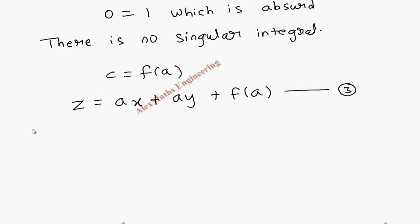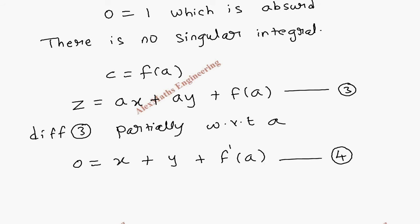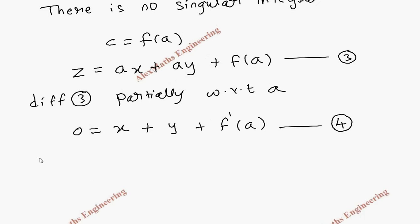Now we are going to differentiate this third expression partially with respect to a. That gives 0 equal to x plus y plus f'(a). Let's keep this as the fourth expression.